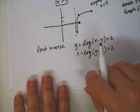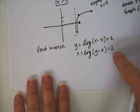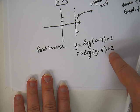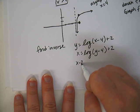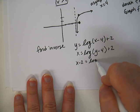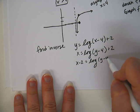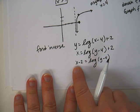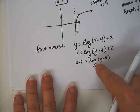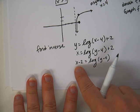So now in order to get rid of a logarithm, we have to change it to an exponent. But we can't do that with this extra two hanging out right here, so we have to move that over. So we'll have x minus two equals log y minus four. Okay, now we think a logarithm is an exponent. What's the base of this logarithm? Base ten.